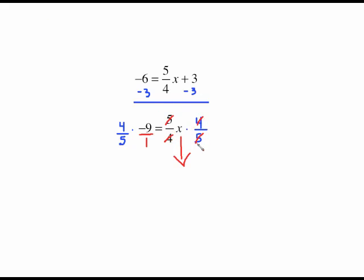The 4s cancel. The 5s cancel. Give this negative 9 a 1 denominator and then when you look here there is no canceling you can do. All you can do is multiply across the top, multiply across the bottom and you get negative 36 fifths equals your x. That is an improper fraction. That is perfectly acceptable. Some people may want you to switch it to a mixed number. Some people may want you to switch it to a decimal. It just depends on what your teacher or what your book wants.